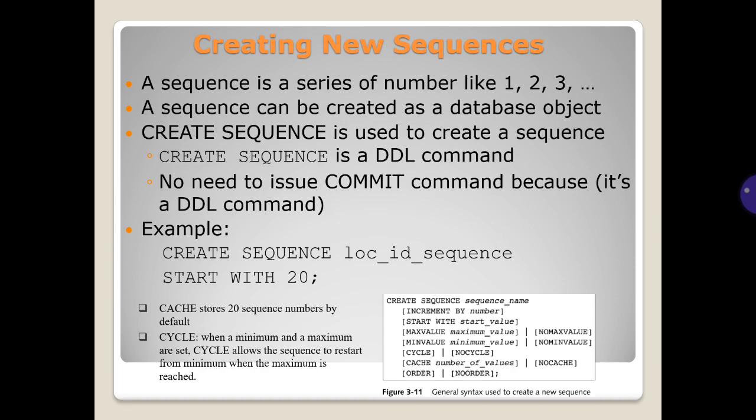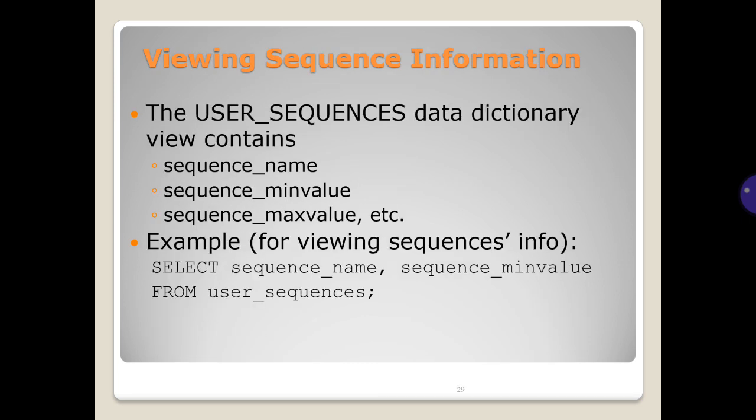Creating new sequences. A sequence is a series of numbers like 1, 2, 3. A sequence can be created as a database object. CREATE SEQUENCE is used to create the sequence. CREATE SEQUENCE is a DDL command. No need to issue commit command because it is a DDL command. There is an example. Viewing sequence information. The user_sequences data dictionary view contains: sequence name, sequence min value, sequence max value, etc. Example.